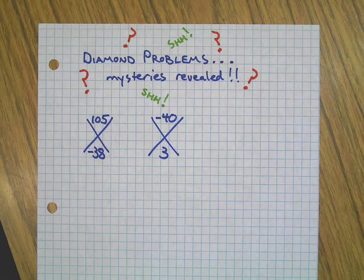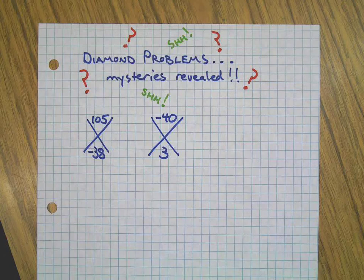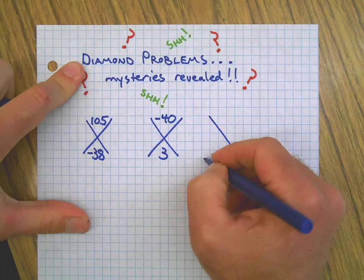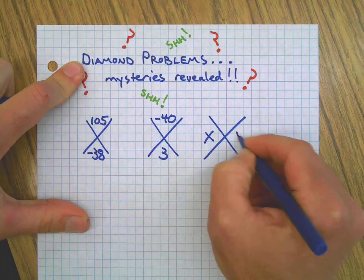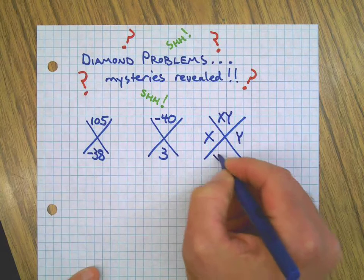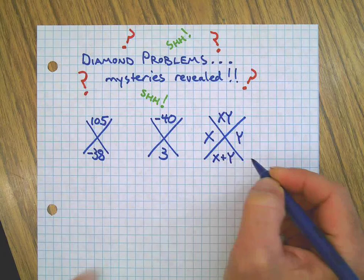In the previous videos we've learned simpler versions of these problems. Remember, the template is if you're given two numbers and you multiply them, the product is on the top and we're putting the sum on the bottom.